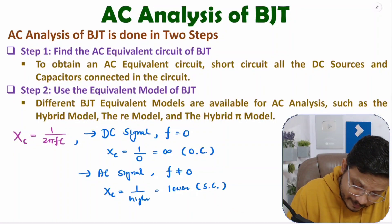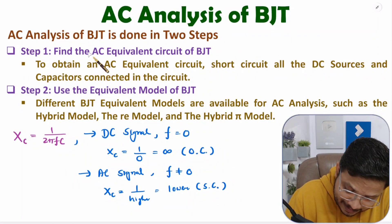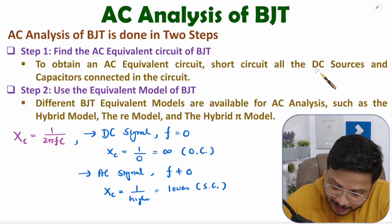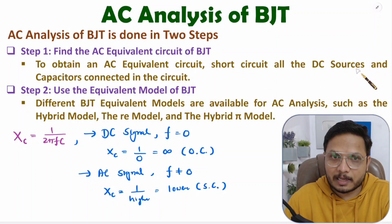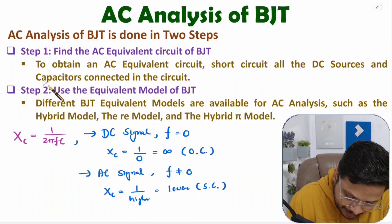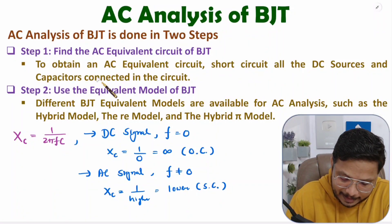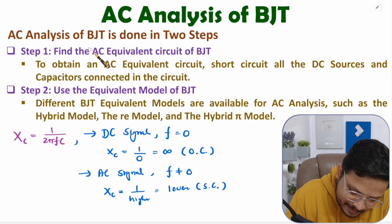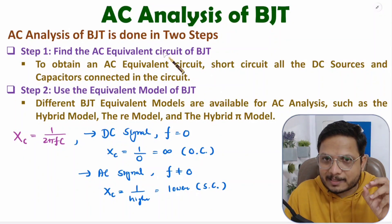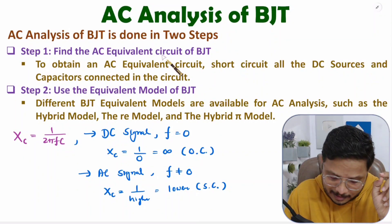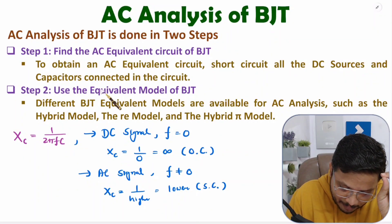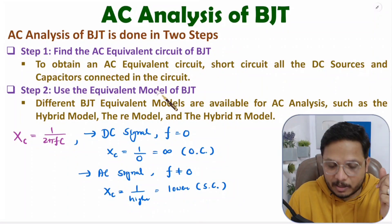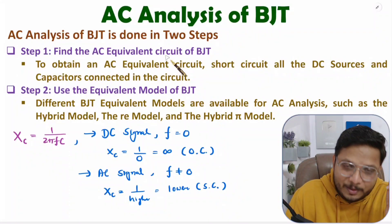So for the AC equivalent circuit, we will be short circuiting all the DC sources as well as all the capacitors connected in the circuit. Once we do that, we will have the AC equivalent circuit with the BJT, which we then replace by an equivalent model in the second step.